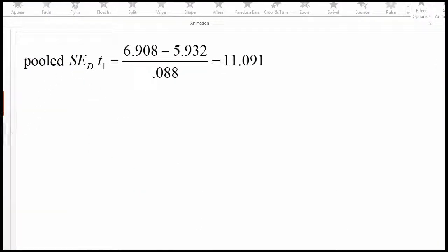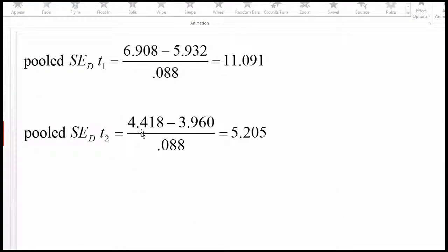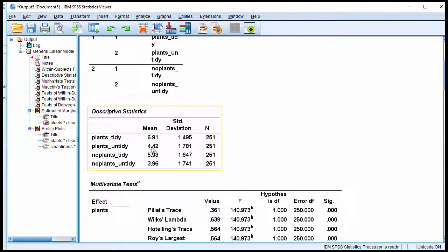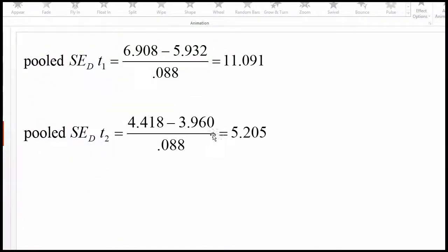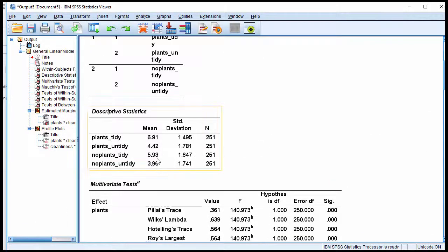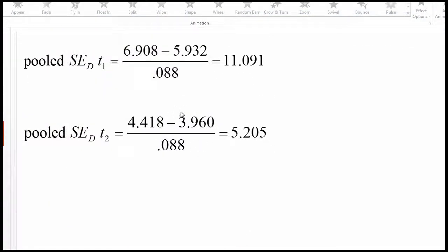And then the next comparison for the simple main effect is 4.418, and I got that number right here, plants untidy. This is all rounded to two decimal places, so it's not exactly the same, and 3.960. So no plants untidy, 3.960.